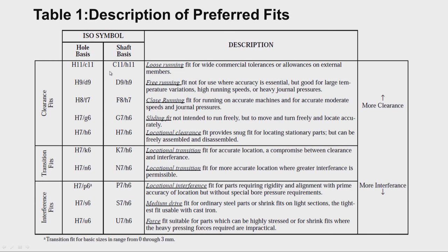Table 4 gives the formulae for fundamental deviation for shafts up to 500mm. Depending on the shaft designation — whether A, B, C shaft, etc. — the upper deviation and lower deviation can be found in micrometers. For example, for shaft D, the upper deviation equals minus 16 times D to the power 0.44 micrometers, where D is in millimeters.